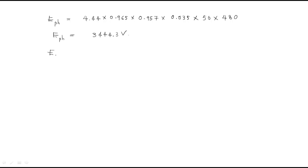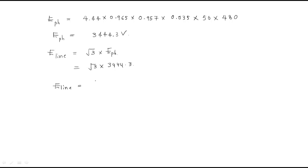For the line EMF: since it is a three-phase star-connected alternator, the relation between line EMF and phase EMF is: E_line = √3 × E_phase. By doing the calculation, we get the line EMF value of approximately 5965 Volts.